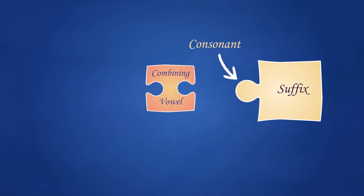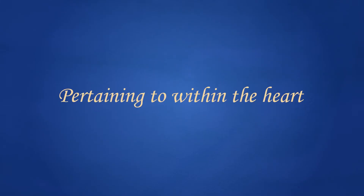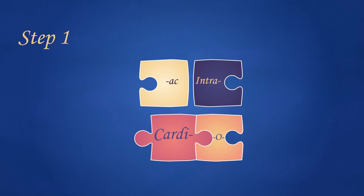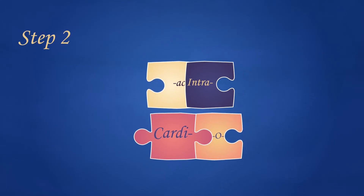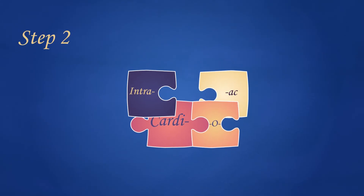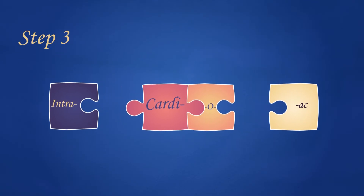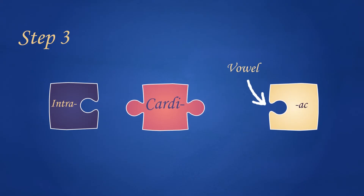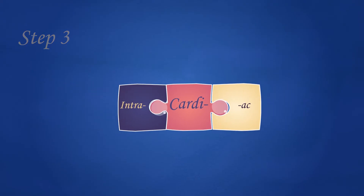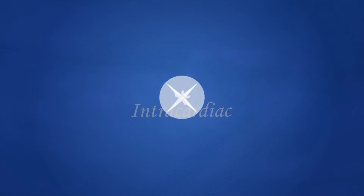Let's add another part. Say you want to build a medical word with this definition: pertaining to within the heart. Step 1: Select the suffix, prefix, and combining form whose meanings match the definition. Step 2: Change the order of the word parts to put the suffix last, the prefix first, and the combining form in the middle. Step 3: Because the suffix starts with a vowel, delete the combining vowel, then join the three word parts. And the term is intracardiac.